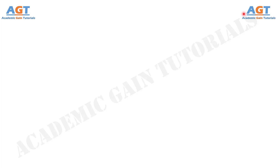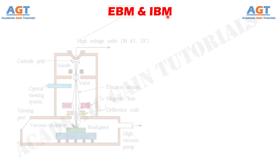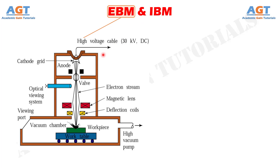Welcome to Academic Game Tutorials. In this video, we will look into the differences between Electron Beam Machining and Iron Beam Machining. Electron Beam Machining is one thermal energy-based non-traditional machining process where a concentrated beam of high-velocity electrons is used to remove material by melting and vaporization.